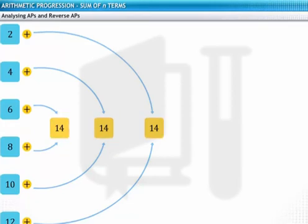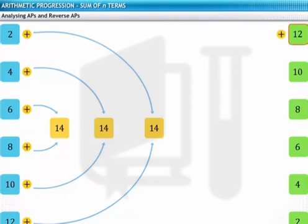This property can be observed in all APs, including reverse APs. For example, if you reverse the given AP, you get 12, 10, 8, 6, 4, 2. Now try adding the first and the last terms of this AP, that is 12 and 2. The sum is 14.